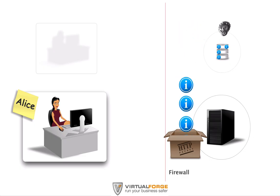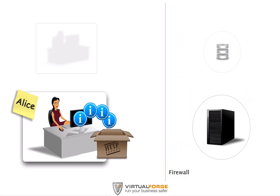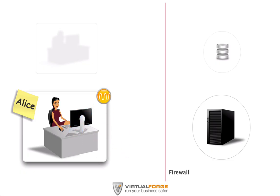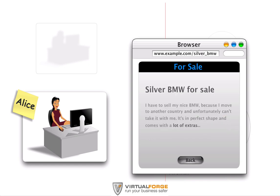When she comes back this time, the list also includes Bob's new entry. The list of cars is rendered in her browser. Since it's new and interesting, Alice decides to have a closer look at Bob's ad. Please note that part of Bob's ad has syntax highlighting — the phrase 'a lot of extras' is bold. So, that's how the application is supposed to work: some people contribute content, others will read it.